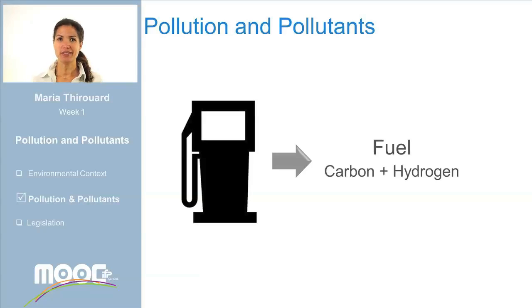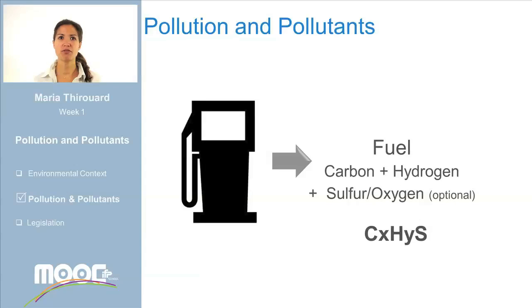Oil is the energy most commonly used for transport. We will see next week how the oil is transformed into fuel. For now you need to know that the fuels are molecules with a high content of carbon and hydrogen. In some cases, sulfur or oxygen can also be found in the fuel. Since the molecules are different in size, we use a general term to describe the chemical composition of the fuel. This is CₓHᵧSᵤ.